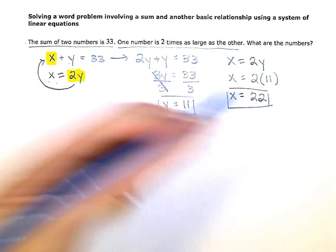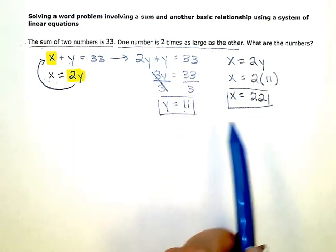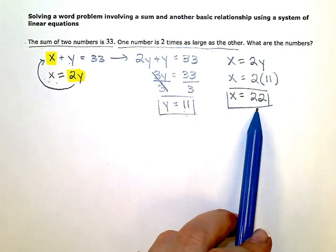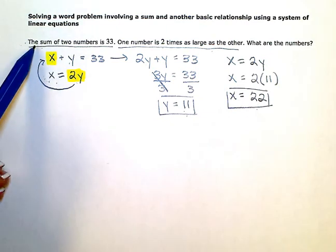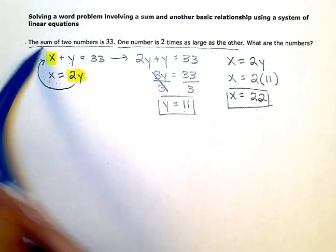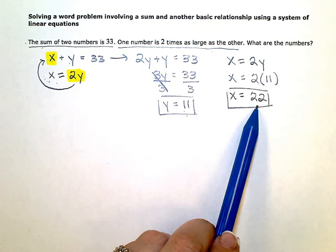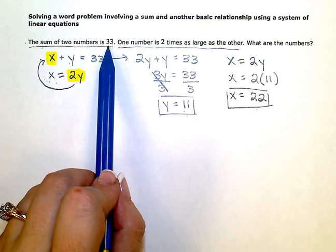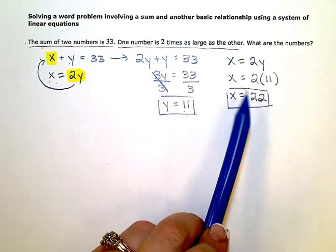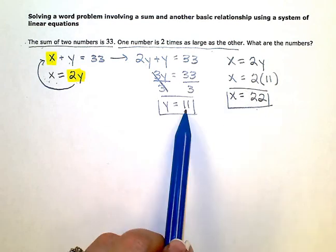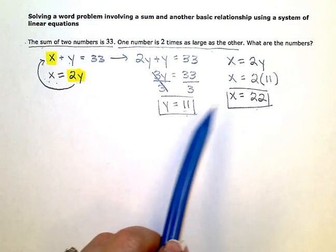So my two numbers are 11 and 22. And if I go back just to check the information I've been given, if I add those two numbers together, 11 plus 22, I do get 33. And one number is 2 times as large as the other number. 22 is the same as 2 times 11.